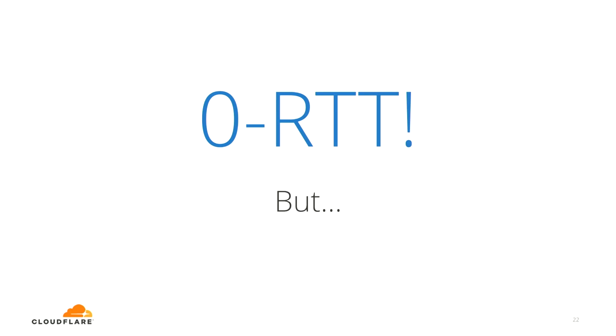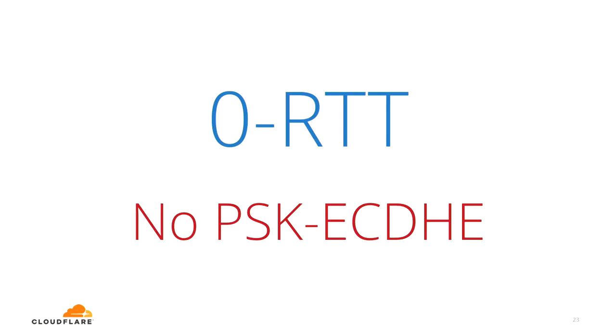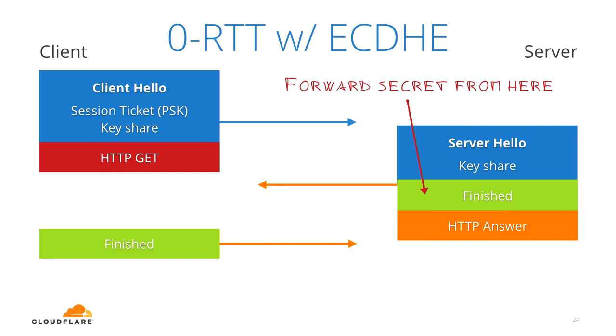0RTT handshakes have two caveats that are theoretically impossible to remove. First, the PSK eCDHE mode — doing Diffie-Hellman for resumed connections in 1.3 — does not help with 0RTT data. The early data is only encrypted with a PSK. So if an attacker stole our session ticket encryption keys, they can look at the client hello, decrypt the session ticket, get the PSK out, and use it to decrypt the early data, even from a recording. The early data is not forward secret with respect to the session ticket keys.